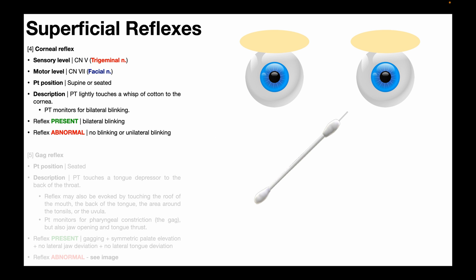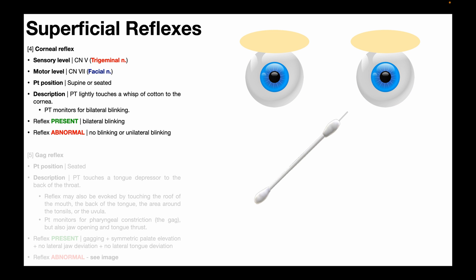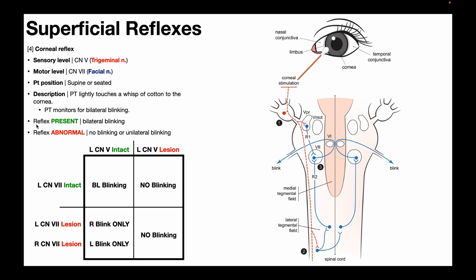We also want to assess the other eyeball and make sure that touching that cornea also produces bilateral blinking. We want to make sure that when we do the other eye, we're using a different q-tip with a different wisp of cotton. Again, bring that wisp in contact with the cornea and we expect bilateral blinking — that's what should normally happen when both corneas are contacted and the entire reflex loop is intact. The reflex is considered present and normal when light tactile stimulation to the left cornea and right cornea both produce bilateral blinking. The reflex is considered abnormal when there's either no blinking with stimulation or only unilateral blinking.